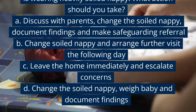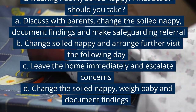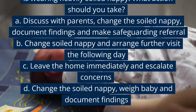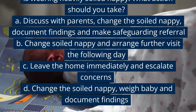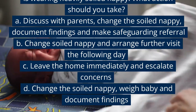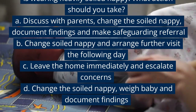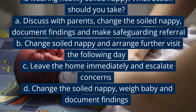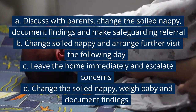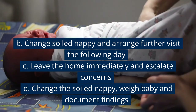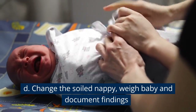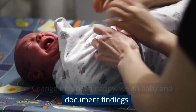Trial Test Question 1: When visiting a family, you notice the home environment is hazardous and the newborn infant is wearing a heavily soiled nappy. What action should you take? A. Discuss with parents, change the soiled nappy, document findings and make a safeguarding referral. B. Change the soiled nappy and arrange a further visit the following day. C. Leave the home immediately and escalate concerns. D. Change the soiled nappy, weigh the baby, and document findings.